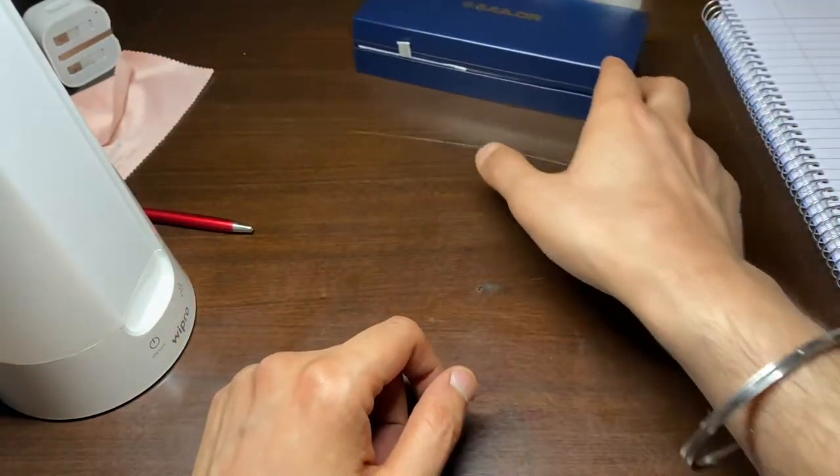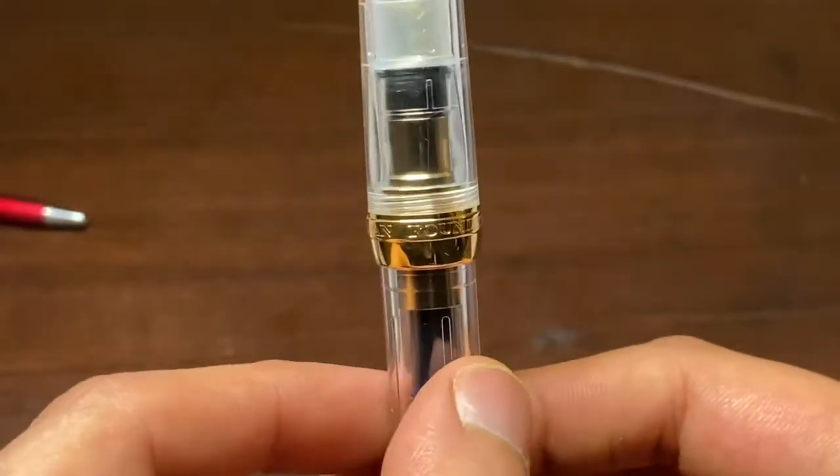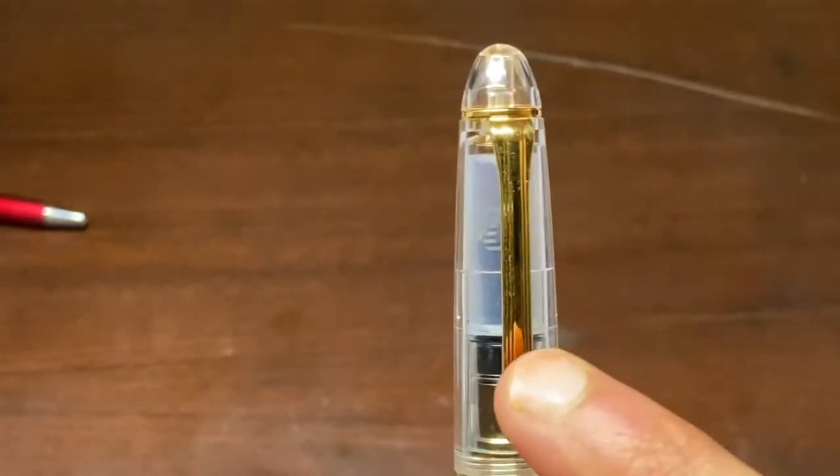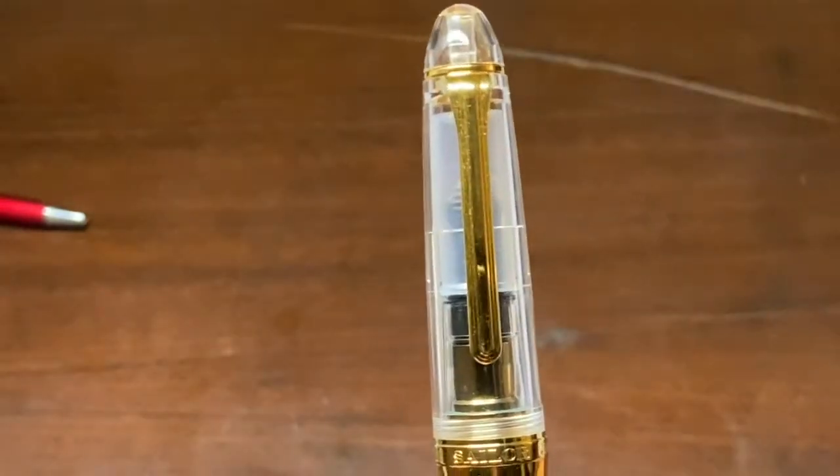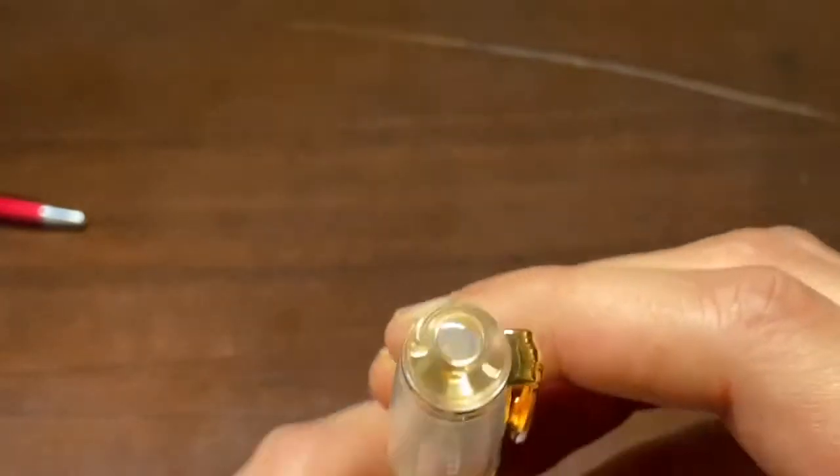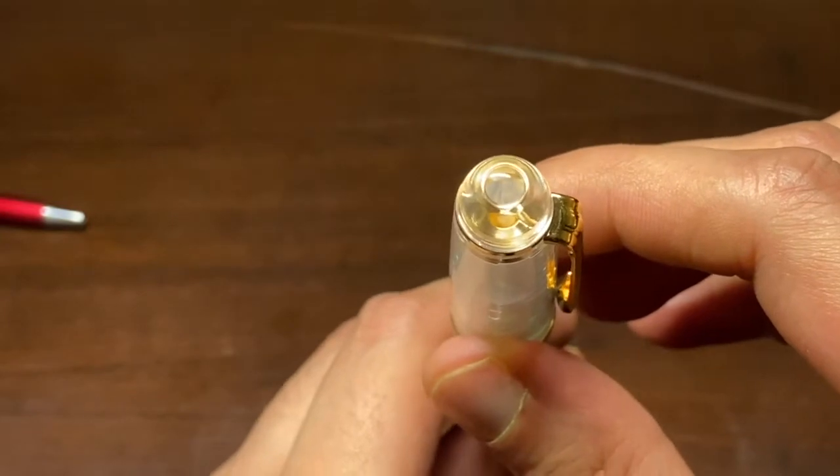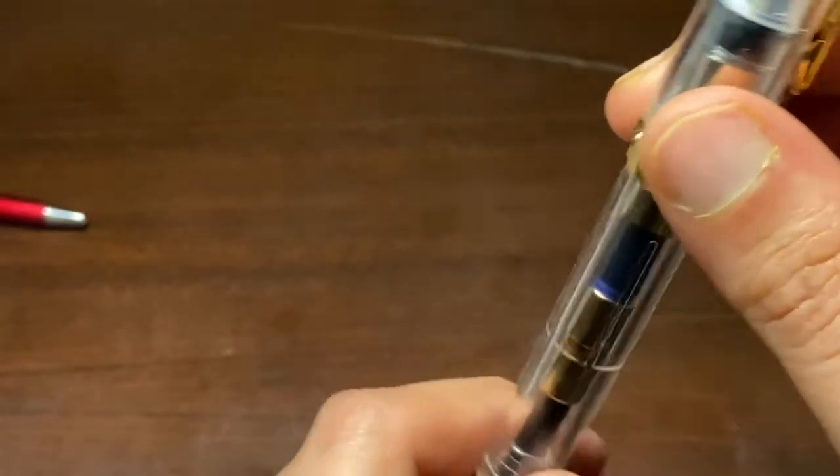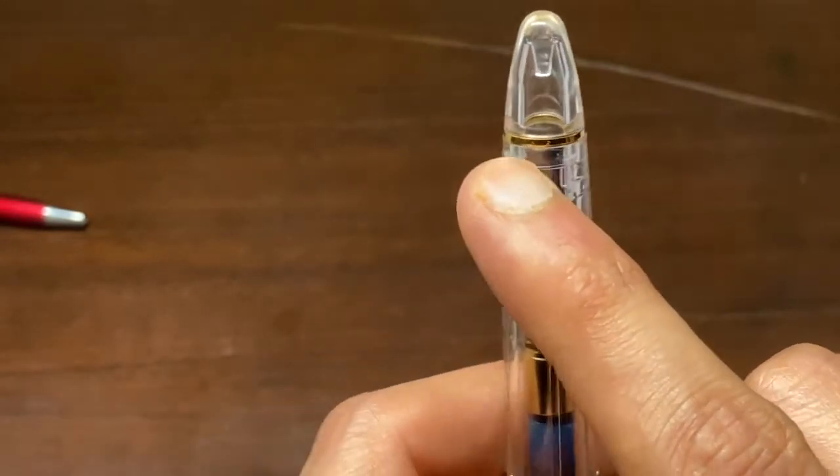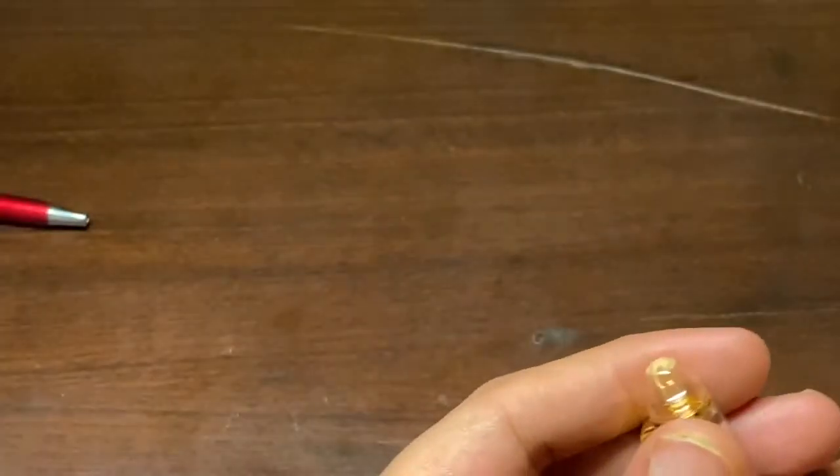On the ring it says Sailor Japan, founded 1911. Then we have the classic Sailor clip. There's a ring on the top and no logo or anything unlike the Professional Gear. And there's one more gold accent at the bottom of the barrel. When we twist this we can get to the pen itself.